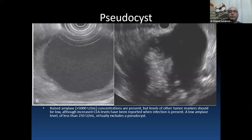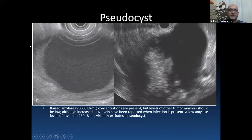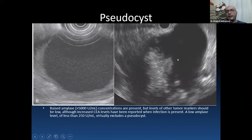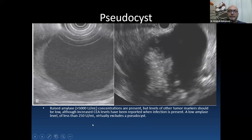Looking at common pancreatic cysts from an EOS point of view, a case of pseudocyst shows a thin wall with clear fluid on the left side and a mix of solid and fluid components on the right. Clinical history is important. EOS FNA with cystic fluid amylase more than 5000 is characteristic, and CEA should not be elevated except in infected pseudocysts. A low amylase level of less than 250 ng/mL can exclude a pseudocyst.